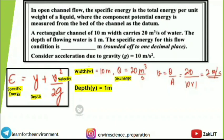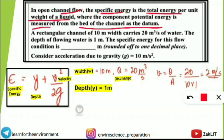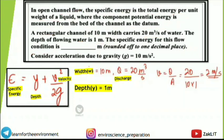The next question: In open channel flow, specific energy is the total energy per unit weight of a liquid where the potential energy component is measured from the bed of the channel. A rectangular channel of 10 m width carries 20 m³/s of water, and the depth of flowing water is 1 m. Find the specific energy. Take g = 10 m/s².